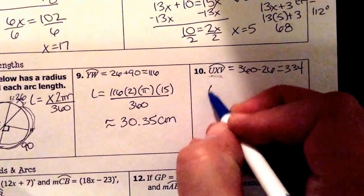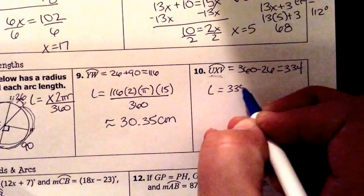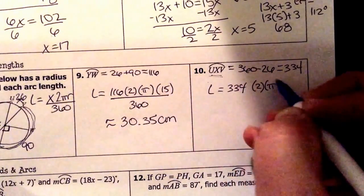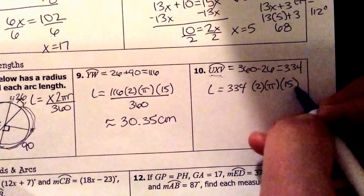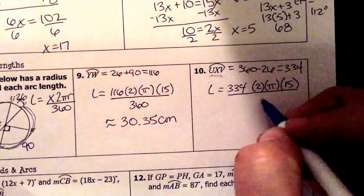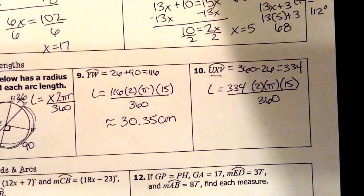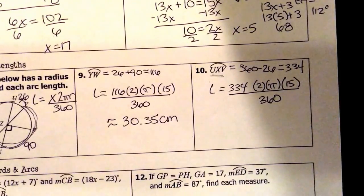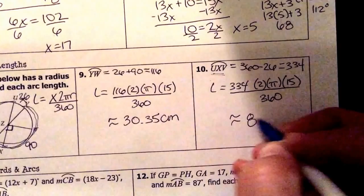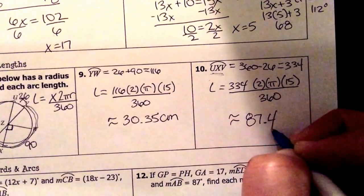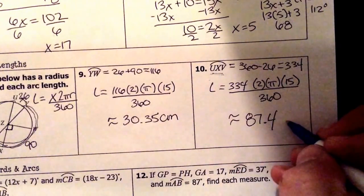Going back to my equation I have arc length is 334, my number of degrees, times 2 times π times my radius 15. That's my circumference again and I'm going to divide that all by 360 one more time. So let's plug that in the calculator. 334 times 2 times π times 15 and I'm going to divide that all by 360 and approximately 87.4 and that's again in centimeters.